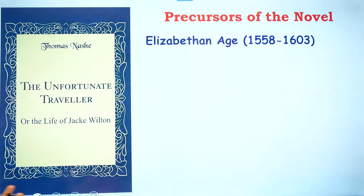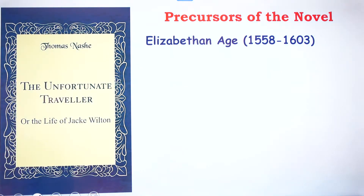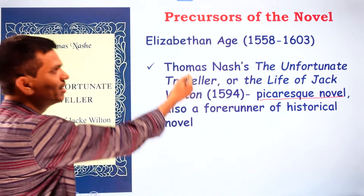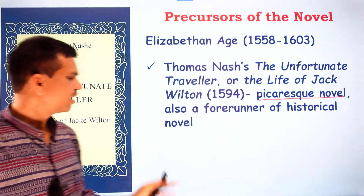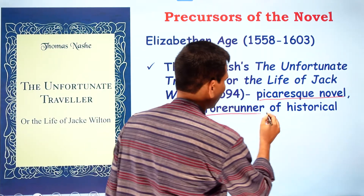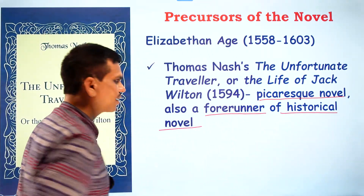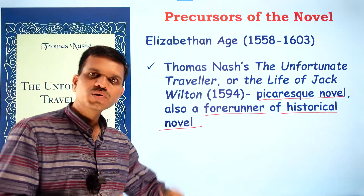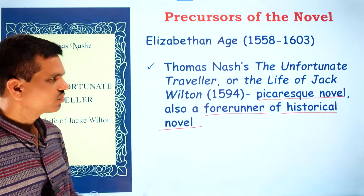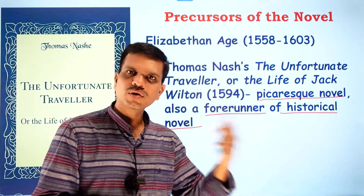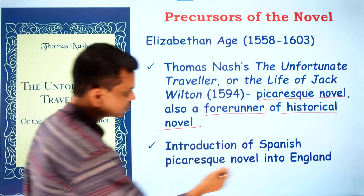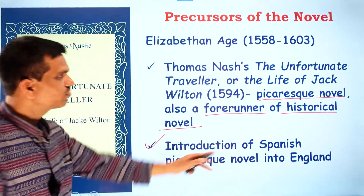Thomas Nashe's work The Unfortunate Traveler, or The Life of Jack Wilton, is significant in this period. This is an example of a picaresque novel, and it is also a forerunner to the historical novel. So different kinds of novel genres — picaresque, historical, romance — were already developing in the Elizabethan age.